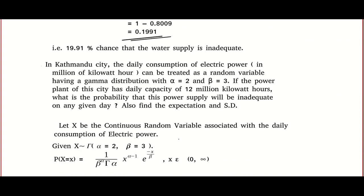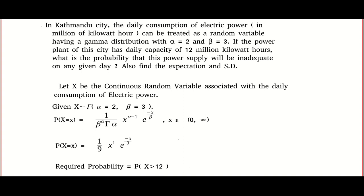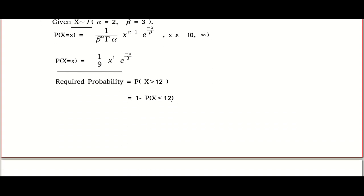This is another question that was asked in your previous year's question paper. In Kathmandu city, the daily consumption of electric power can be treated with alpha equals 2 and beta equals 3. They are asking you to find expectation and standard deviation. That's pretty easy. Expectation is alpha into beta and standard deviation is alpha, beta square. So, let X be the consumption, the required probability. Because inadequate means, the supply, look at this, they can supply up to 12 million kilowatt hour. So, it becomes insufficient if the demand will be more than 12.